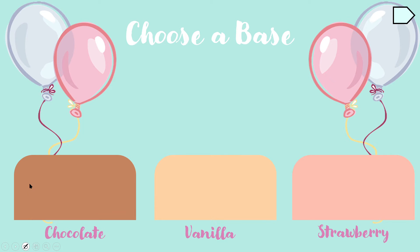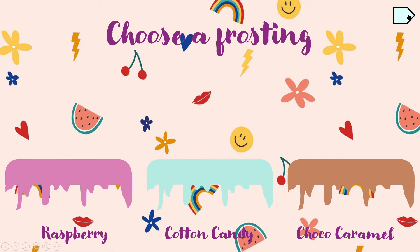At the top there's an arrow to lead us to where it goes next — click on that. Now we have 'Choose a Frosting.' I have red, raspberry, cotton candy, and chocolate caramel. I'm going to click on cotton candy.